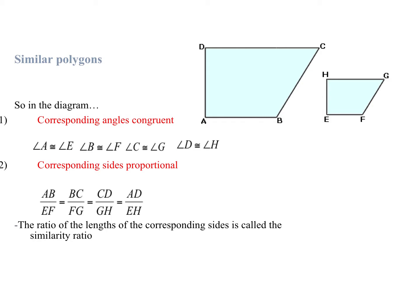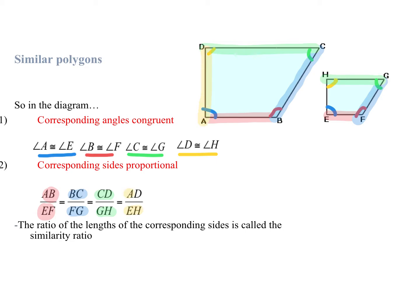So in the diagram we can say that we have the corresponding angles congruent because angle A is congruent to angle E, angle B is congruent to angle F, angle C is congruent to angle G, and angle D is congruent to angle H. And similarly we have to match up the corresponding sides that are proportional in the same ratio: AB over EF, BC over FG, CD over GH, and AD over EH all should have the same ratio. And that ratio is what we call the similarity ratio.